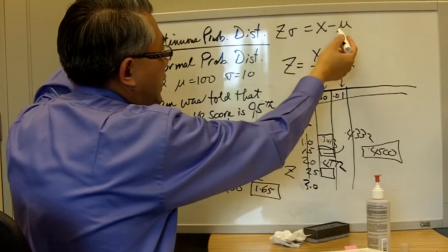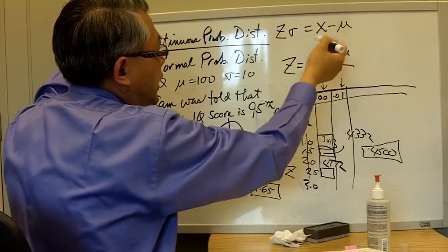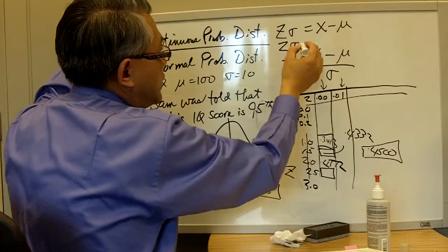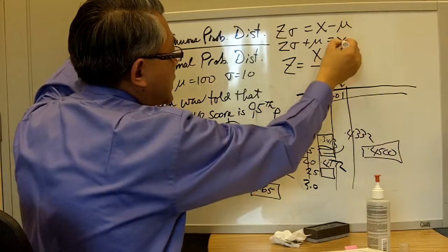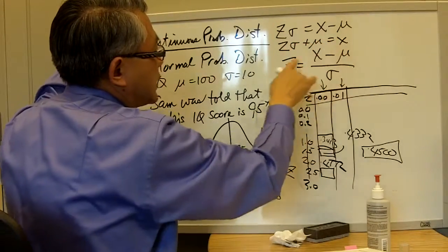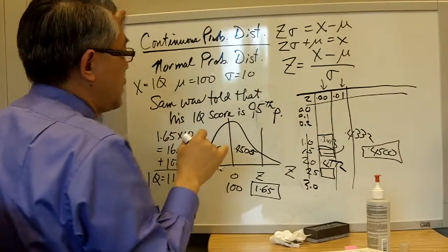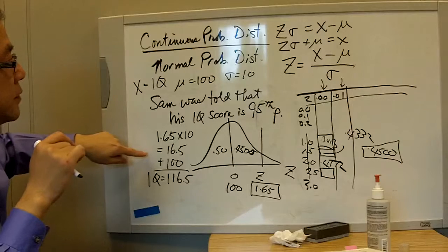and if you add μ to each side of the equation, then it becomes σ times z plus μ equals x, or you can flip it, x equals σ times z plus μ, and this is how we got this answer right here.